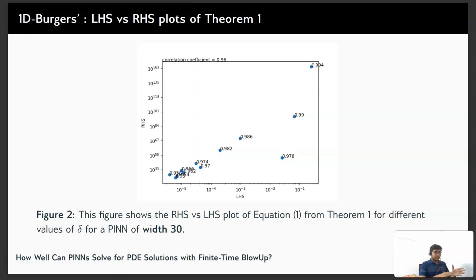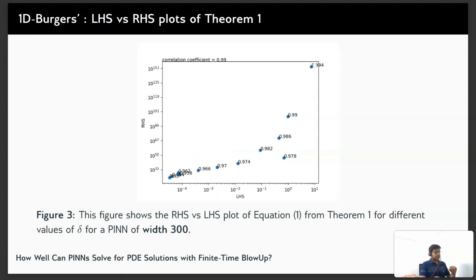So in this figure we see the RHS versus the LHS plot for different values of delta. We see from delta 0.95 to 0.994 and the correlation coefficient here is 0.96. This is for width 30 neural network and next we have for width 300. Here the correlation coefficient is much higher as one might have expected.